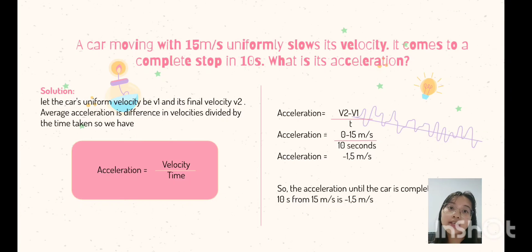And the last question, a car moving with 15 meters per second uniformly slows its velocity. It comes to a complete stop in 10 seconds. So, what is its acceleration? So, the solution is, let the car's uniform velocity be V1 and its final velocity V2. Average acceleration is difference in velocities divided by the time taken.